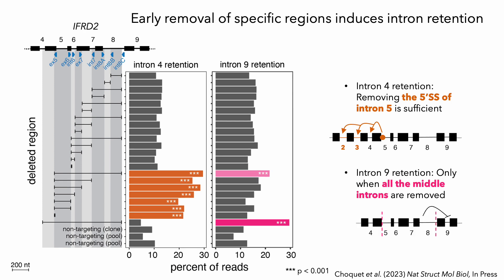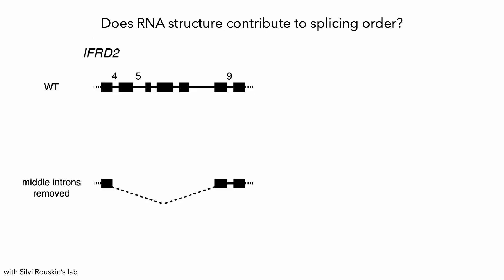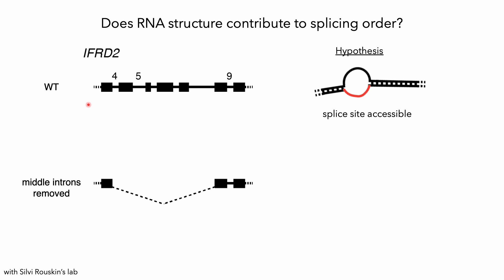In contrast, for intron 9, we saw that it was only retained if all the middle introns were removed simultaneously, suggesting that there isn't one dysregulatory element that mediates this effect. Instead, we wondered whether RNA structure might underlie what we're seeing, where in the wild-type RNA, where intron 9 is usually removed early, the completely unspliced pre-mRNA might adopt a secondary structure in which the splice sites of intron 9 are readily accessible. In contrast, if the middle introns are removed too early prior to intron 9, this might lead to a different secondary structure in which the splice sites of intron 9 are inaccessible.